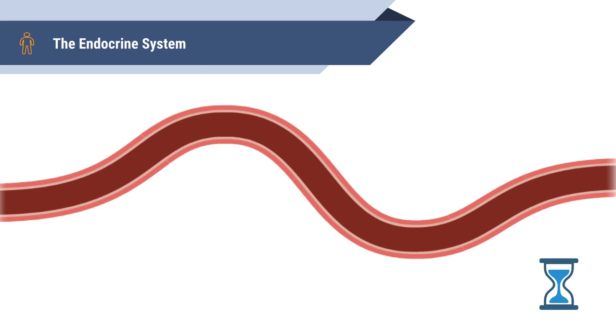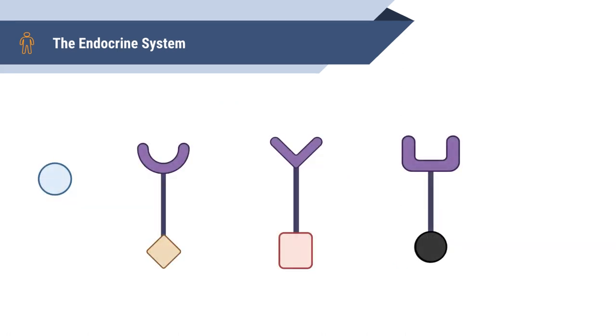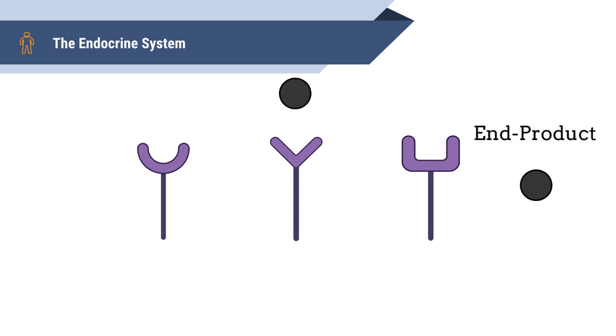Negative feedback loops are the main player to regulate these processes. They ensure that the process stops when homeostasis is achieved. This is done by the end product of a chemical cascade being used as the inhibitor to the initial input, so the process slows down and eventually stops when the achieved concentration of end product is made.